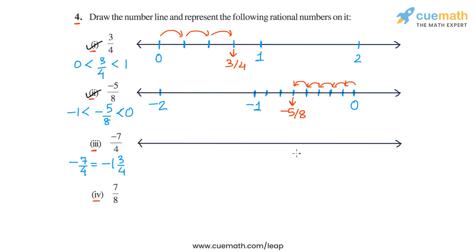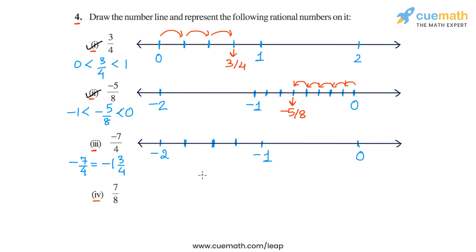Let's make integer markings on the number line once again. So let's say this is minus 2, this is minus 1, and this is 0. Minus 7 by 4 will lie in the interval between minus 2 and minus 1. To plot this number, let's divide this interval into four equal parts. First I split it into two equal parts by plotting the midpoint, and then I divide each half into two equal parts again. Now you have divided the interval between minus 2 and minus 1 into four equal parts.